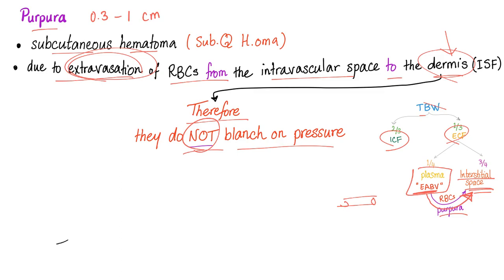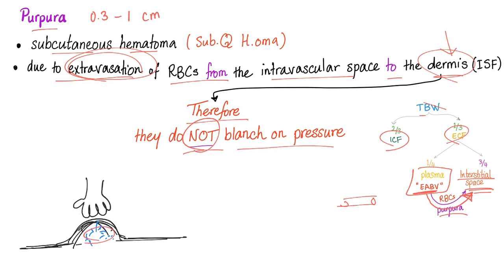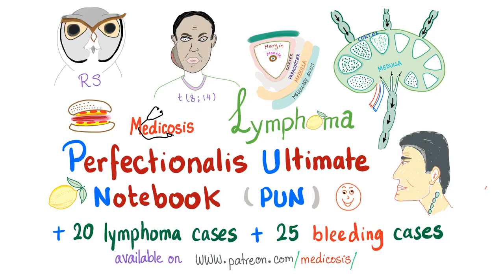This is different from some fluid — like when an insect or a bee bites you, you have some fluid. When you press on that fluid caused by an insect bite, it's blanchable, because it's just some plasma; it's going to go back to the blood vessel, and when you release your hand it comes back. Purpura do not blanch. However, allergic reactions do blanch, because the former are red blood cells and the latter is just some plasma.